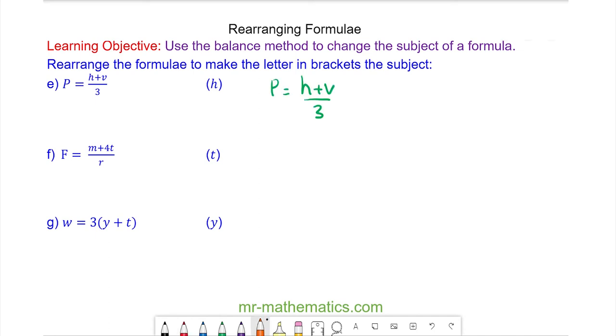For question e I'm going to make h the subject. I'm going to draw a line through the equal sign. This makes it easier for me to see the left and the right side. The first thing I need to do is move this division of three to the other side by multiplying both sides by three because division is the opposite of multiplication so these will cancel.